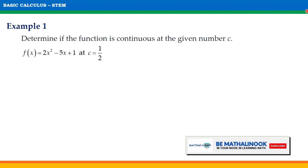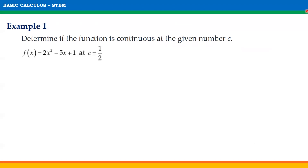For the first example, determine if the function is continuous at the given number C. f(x) = 2x² − 5x + 1 at C = 1/2. To determine if the given function is continuous at C, the three conditions should be satisfied. For the first condition, f(C) exists. We need to solve for the value of f(C) by substituting 1/2 for x in the given function.